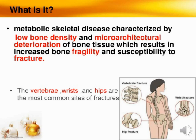Deterioration also happens in osteoporosis — it means the process of becoming progressively worse. If a person is suffering from osteoporosis, that condition day by day increases, and one day the progressive condition becomes very worse. The result of this is increased bone fragility — fragility means the quality of being easily broken or damaged, just because of low bone density.